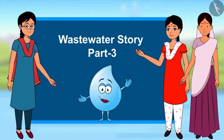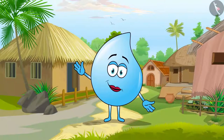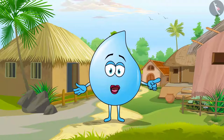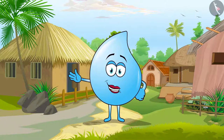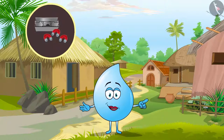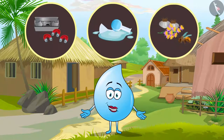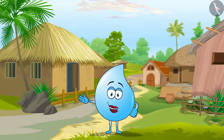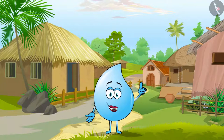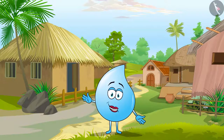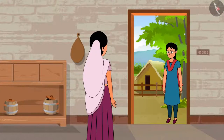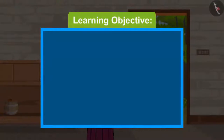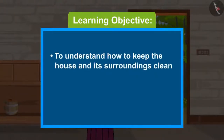Wastewater Story Part 3. Hello children. You learnt about waste water treatment in the previous video. Wastewater has to go through 4 to 5 stages to be treated. This treatment involves physical, chemical and biological processes. We all have a responsibility to have good housekeeping practices so that we can reduce or completely remove waste materials and pollutants from the water. The purpose of this video is to learn about good housekeeping practices and cleanliness and sanitation in public places. The objective of this video is to understand how to keep the house and its surroundings clean and what is cleanliness in public places.